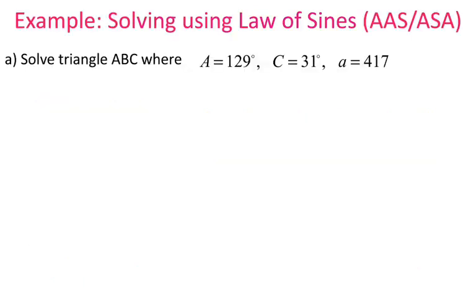Here is our first problem: solve triangle ABC where angle A is 129 degrees, angle C is 31 degrees, and side a is 417. Let's go ahead and solve this triangle.